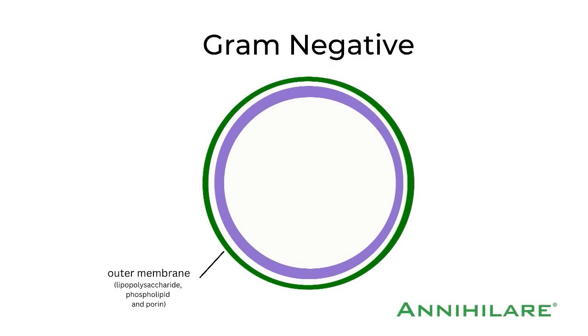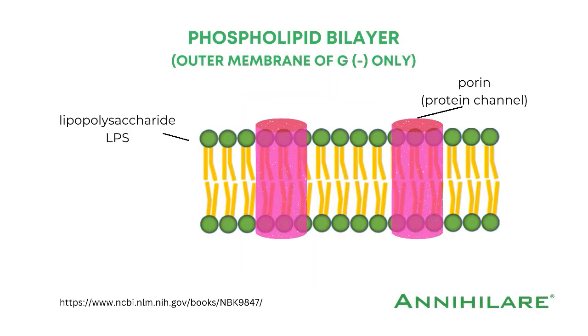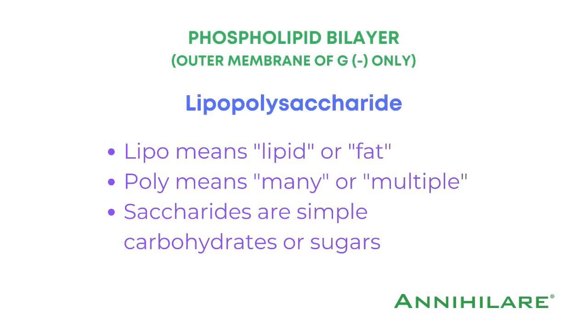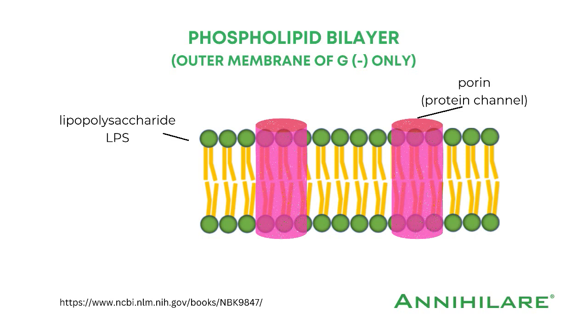Now that we've covered cell walls, let's switch to gram-negative and its additional layer. We're going to tackle this word together as well: lipopolysaccharide. Lipo means lipid or fat, poly means many, and saccharide is another word for simple carbohydrate or sugar. This additional membrane provides another form of protection which makes gram-negative a little trickier to kill. In fact, some quaternary ammonium compounds can't kill gram-negative bacteria — their words, not mine.